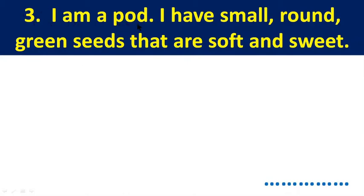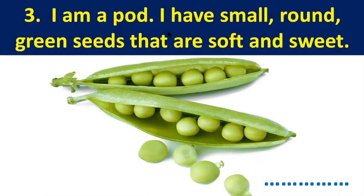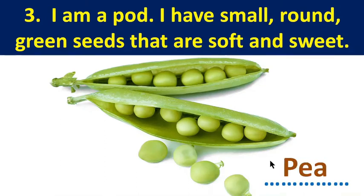Number three: I am a pod. I have small, round, and green seeds that are soft and sweet. This vegetable has small, round, green seeds that are soft and sweet, so this is pea.